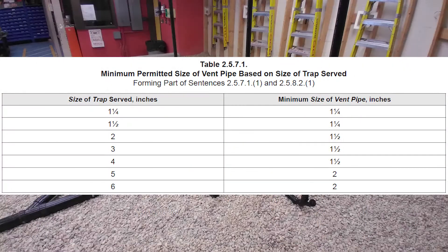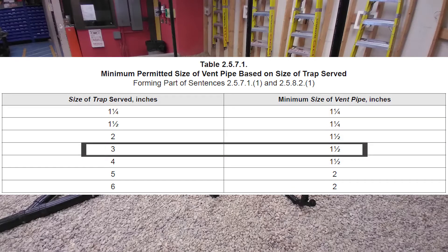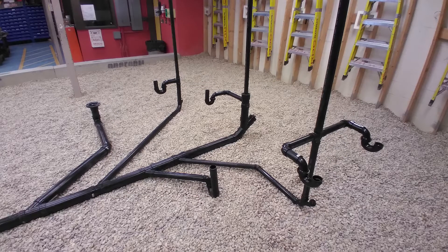Of course, I need to check table 2571 based on the size of the largest trap served, which is the three inch water closet, so the minimum size will still be one and a half inches. That brings us to the end of this video. Stay tuned for the next video, which is the conclusion of the wet venting series, where we get into multi-story wet venting. Until that time, have yourself a ridiculously good day.